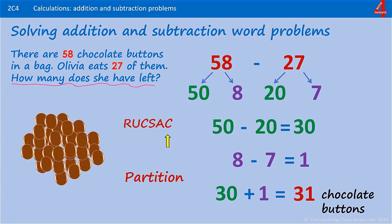There are 31 chocolate buttons left. And to check this, use the inverse operation. We have 31. We are going to add that to the 27 we took away, and we get 58, which is what we started with.